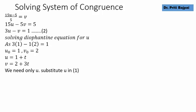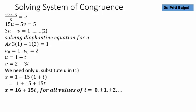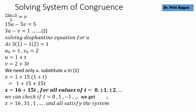Substituting U = 1 + T into equation 1 gives X = 16 + 15T. As T takes all integer values 0, ±1, ±2, …, we get infinitely many solutions. We can verify: T = 0 gives X = 16, T = 1 gives X = 31, T = −1 gives X = 1 — and all of these satisfy the original system.